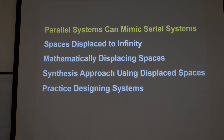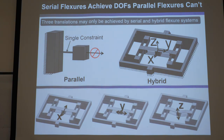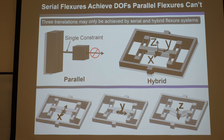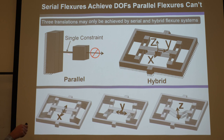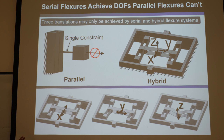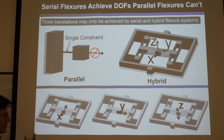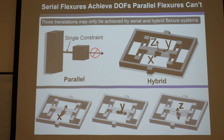Parallel systems can mimic serial systems. You can't achieve three independent translations with nothing else — just a parallel system. If you wanted a system that just had X, Y, and Z translations with no rotations and no screws, that freedom space cannot be achieved by a parallel system, because the second you add a single wire to a body, you kill one of the translations. You add that, you kill one of your three translations. So you obviously can't have a freedom space that's three translations unless you do serial or hybrid. In this case, this is a hybrid design that's all nice and symmetric, so it can achieve three translations only.